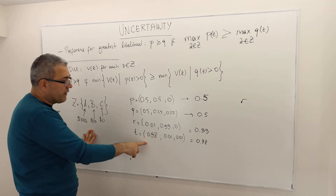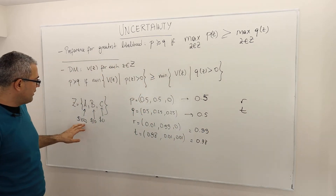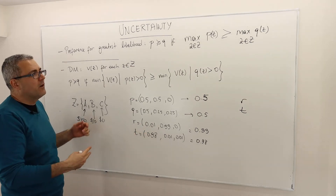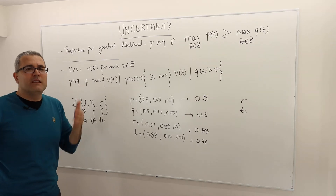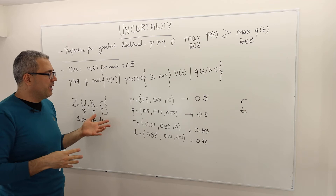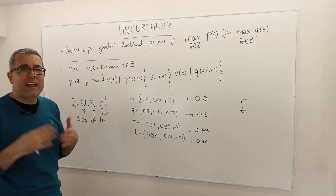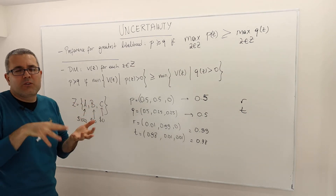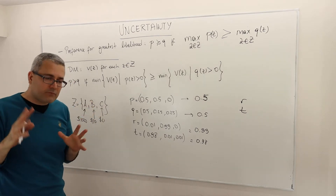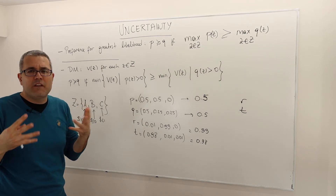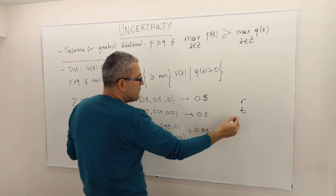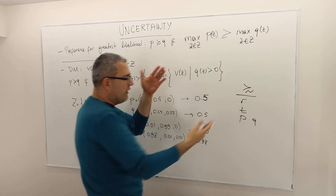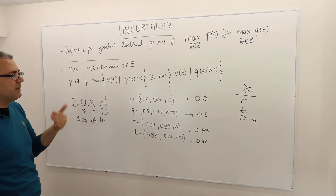So if we rank those lotteries for this decision maker: R is his first best because it has the highest likelihood, although the outcome is almost the worst — just $10. His second best is T. So he's winning $1,000 with a great probability, but he still prefers R over it. When you ignore the values of outcomes, you may end up with pretty weird preferences. But again, this may make sense if the outcomes have similar values for you. P and Q are indifferent, so R is best, T second, and P and Q are tied last.